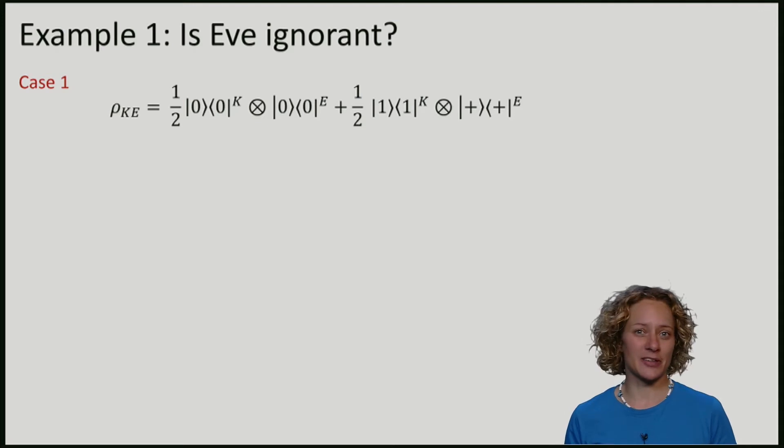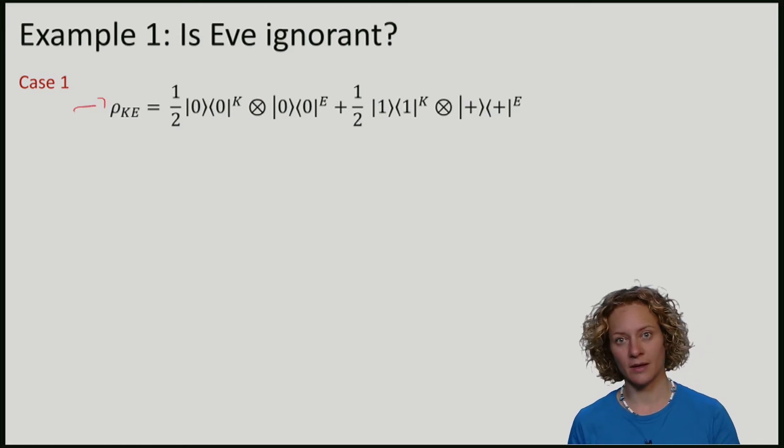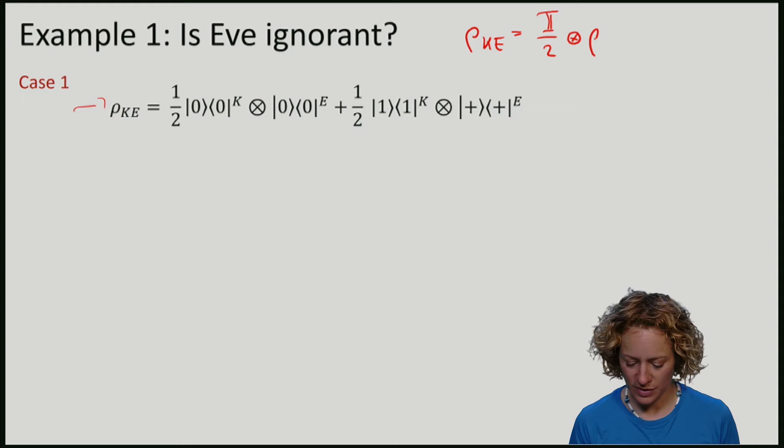Let's consider again a scenario where there is only one bit of key and the state rho is as follows. Remember that if Eve is ignorant about the key, we should be able to write rho k e. If I have one bit of key, it's the maximally mixed state, two possible keys, tensor some state on e.